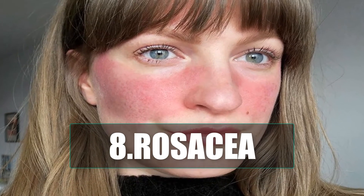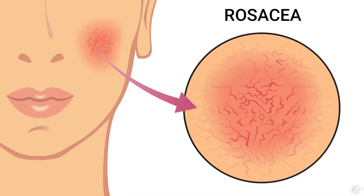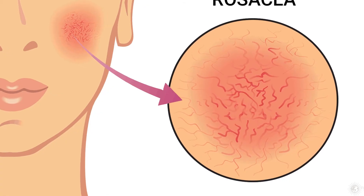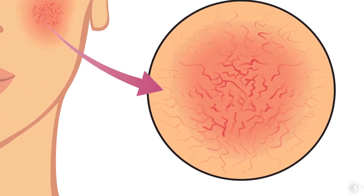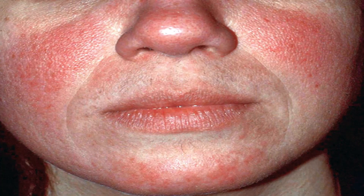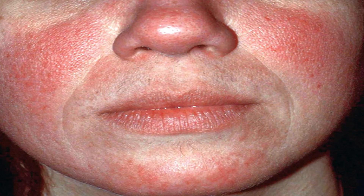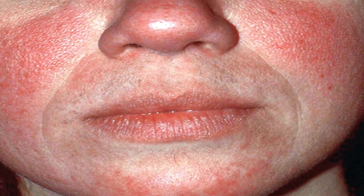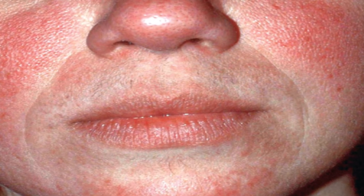Number 8: Rosacea. Rosacea is a common skin condition that causes redness and visible blood vessels in your face. It may also produce small red, pus-filled bumps. These signs and symptoms may flare up for weeks to months and then go away for a while. Rosacea is most common in women over 30, but men can be affected too. Problems with the immune system, vein problems and or environmental issues can cause this condition.